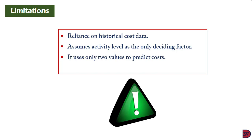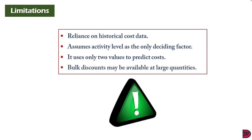The third limitation is that it only uses two values to predict cost — the highest and lowest — assuming these are accurate for predicting future output costs. The other data points may not align with predictions from the two extreme values. Lastly, when discounts are available at large quantities, there can be a distortion in assumptions, leading to unreliable predictions if not properly accounted for.